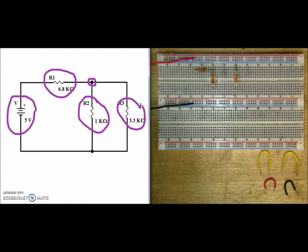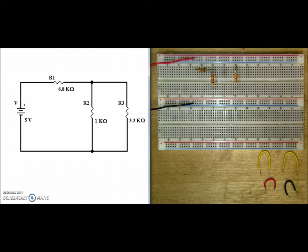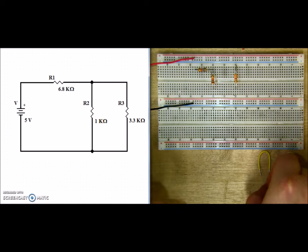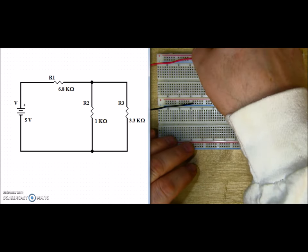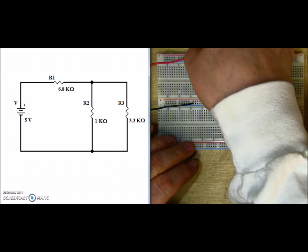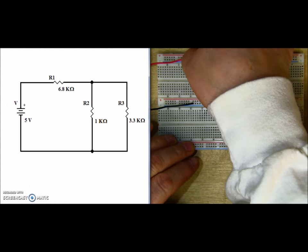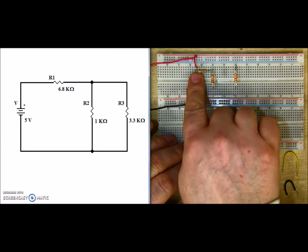Now we're still not done, we still have the jumpers to put on. So let's go ahead and place our jumpers. Our positive jumper will go into our positive bar and connect up to R1.